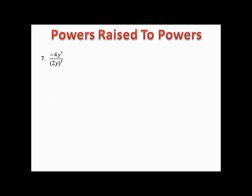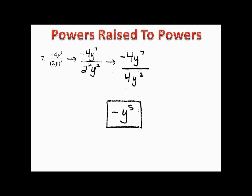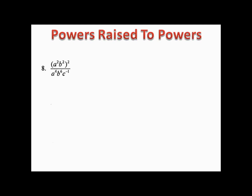Example seven: in the denominator we distribute the exponent outside the parentheses, giving us 2² · y². Two squared is 4, and negative 4 divided by 4 is negative 1. With the y's, we subtract exponents: 7 minus 2 gives us 5, so we have negative 1 times y⁵, or simply negative y⁵.